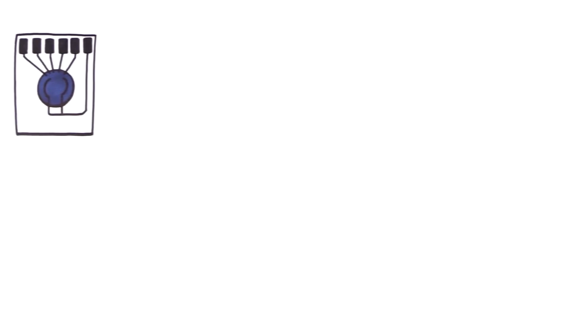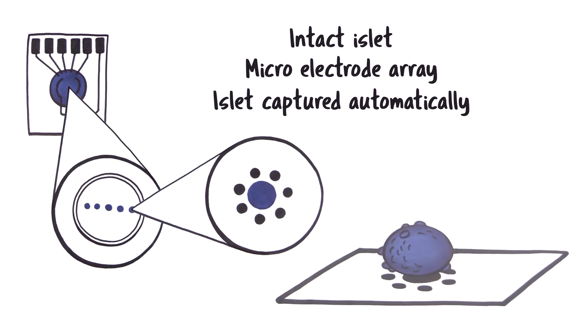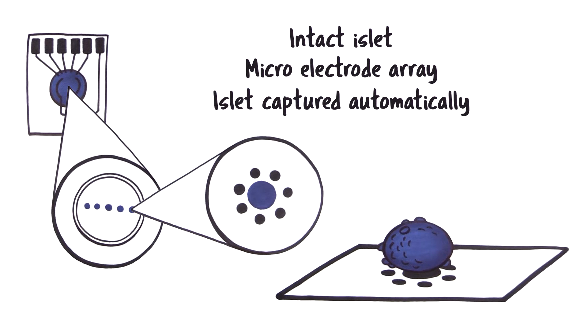Instead of piercing a cell membrane like we do for a patch clamp, the intact islet is pipetted onto the flat microelectrode array. A suction trap mechanism captures the islets directly above the electrode automatically.